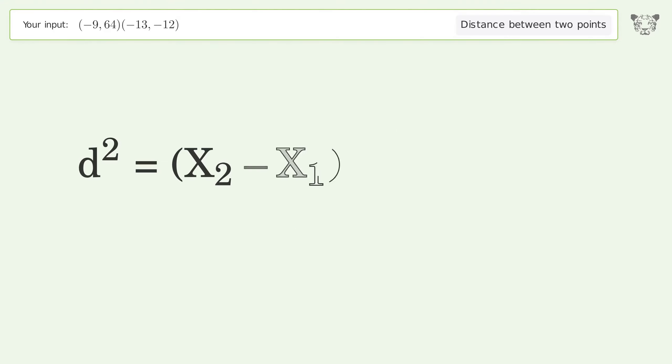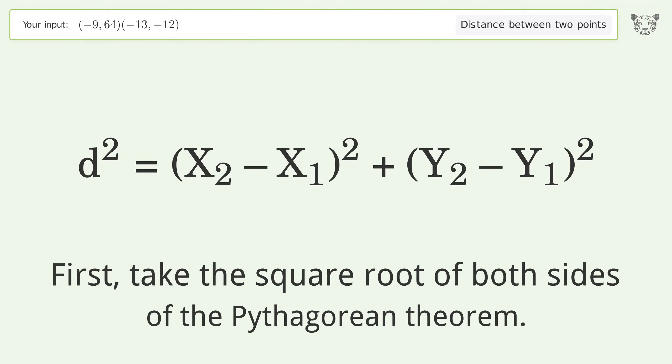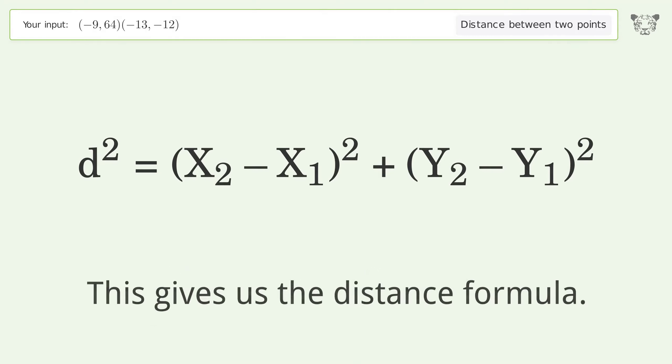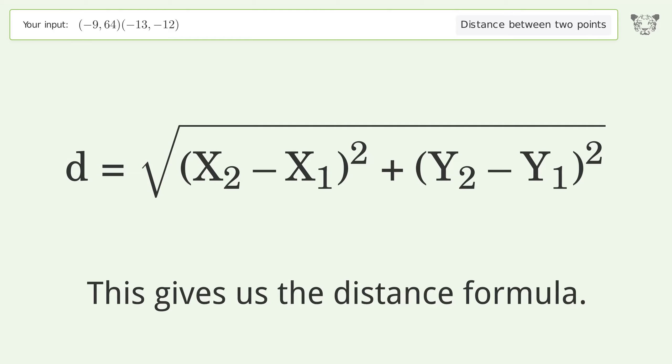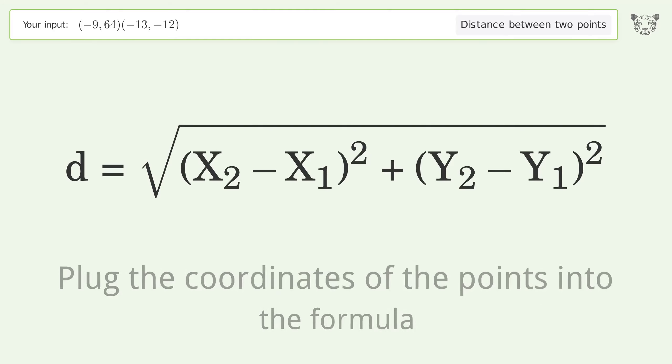d is the distance between the two points. First, take the square root of both sides of the Pythagorean theorem. This gives us the distance formula.